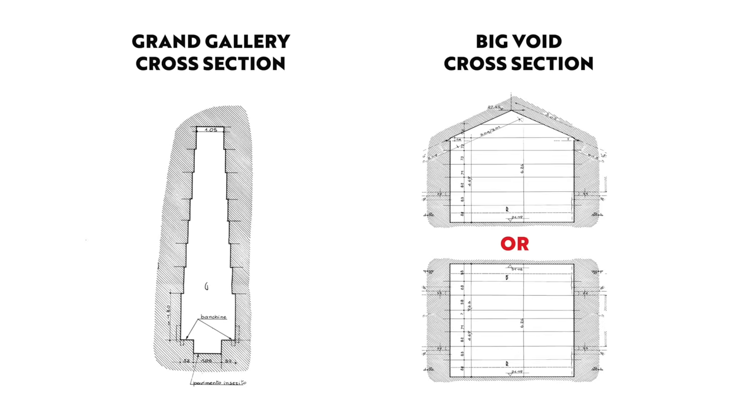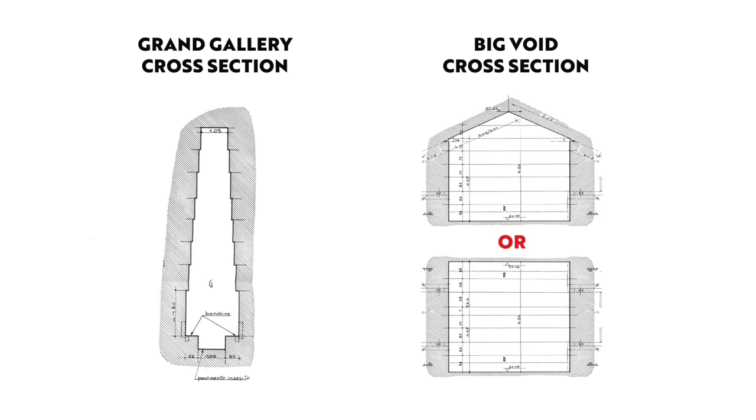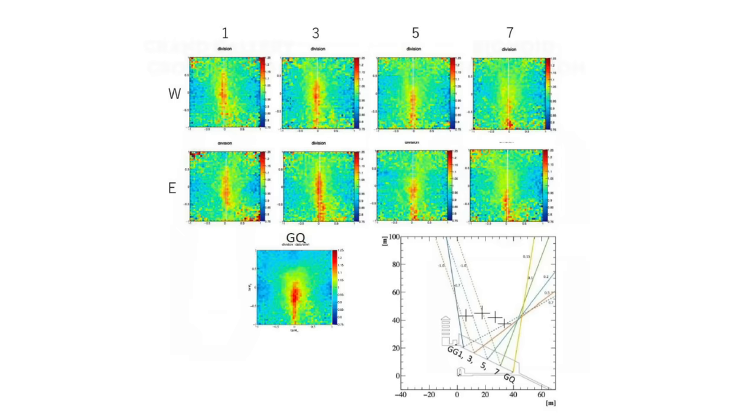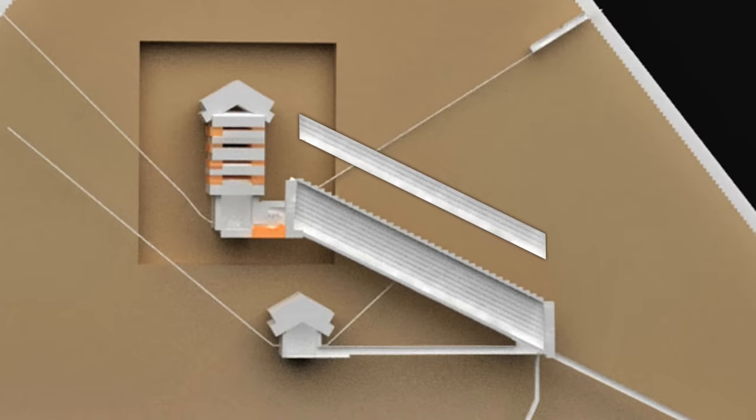Therefore, if these new measurements are indeed correct, the big void is a completely different shape to the grand gallery, implying it may have had a completely different function. Its northern and southern edges, the limits of the void are clear to see on the latest round of scans. But we still don't know if we're looking at one, two or three voids, each position side by side. And we still don't know if it's inclined or straight.